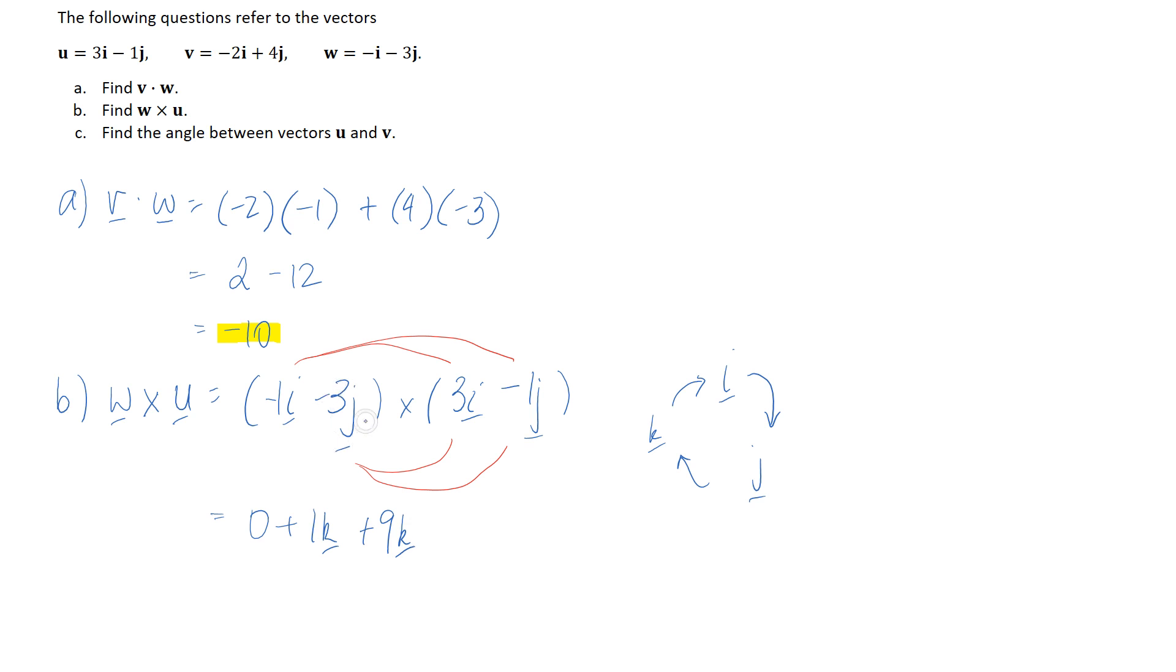So we have one left we need to do negative three j crossed with negative one j. Now we have a unit vector crossed by itself here so that means that it's going to go to zero.